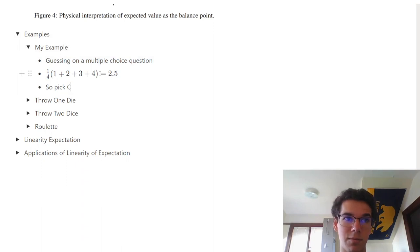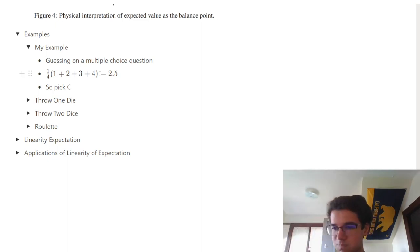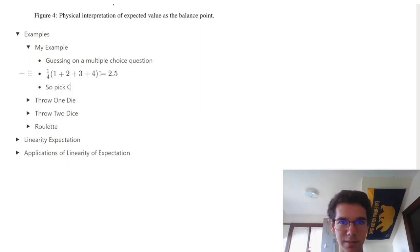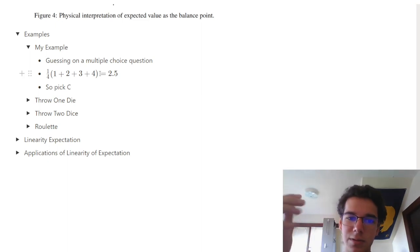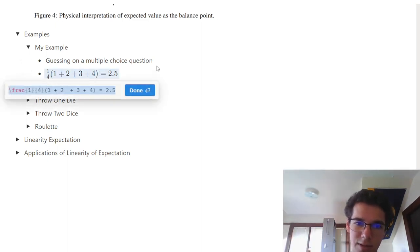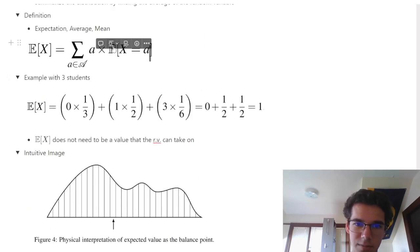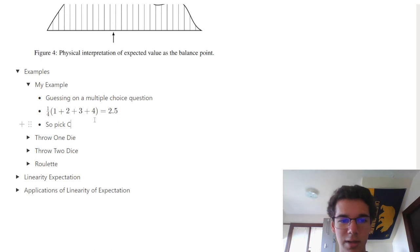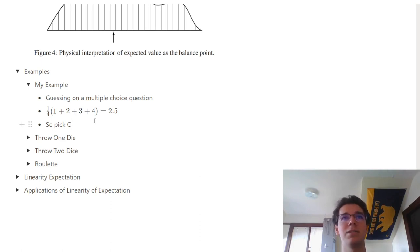Here's an example: if you're guessing on a multiple choice question with four options A, B, C, D (values 1, 2, 3, 4), you have a 1/4 chance of each option. Plugging into the expectation formula, the expected value is 2.5, which rounds to C. So if you need to guess, pick C.